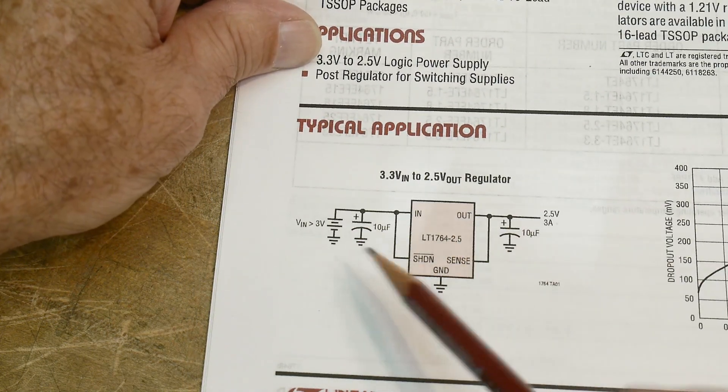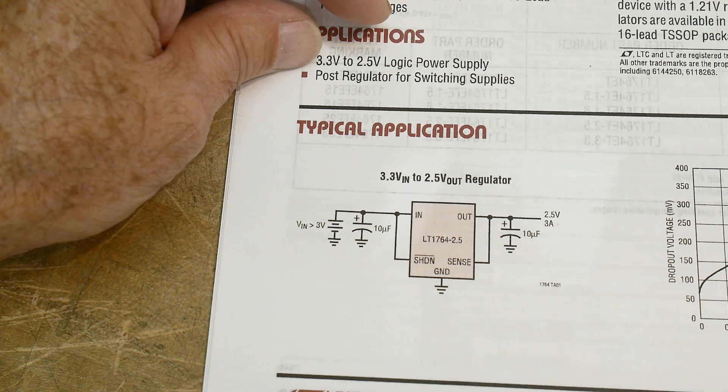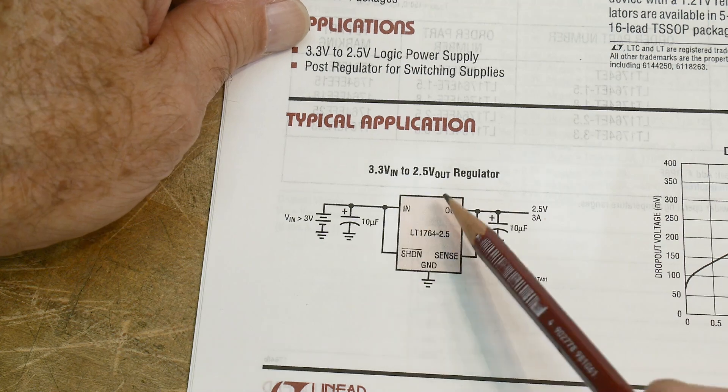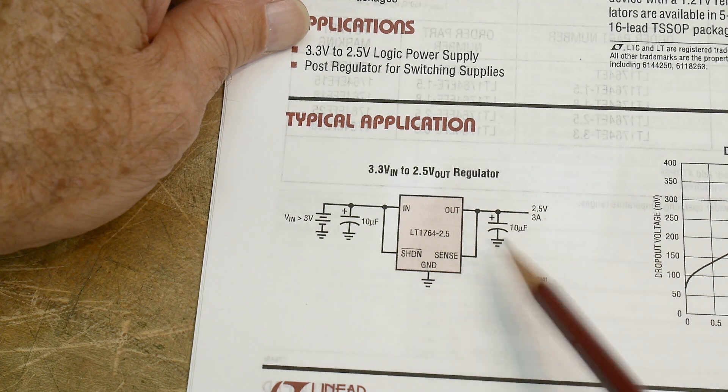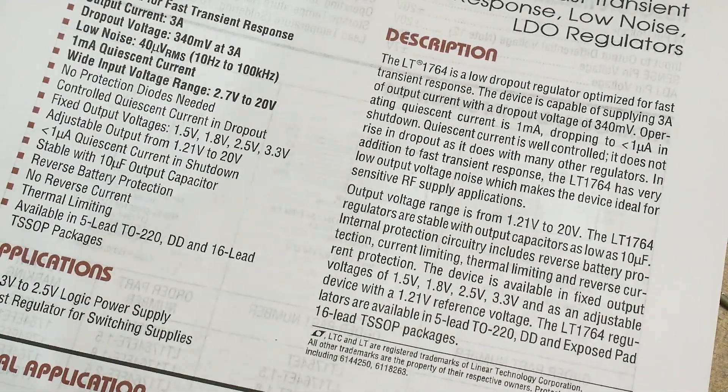So this is how you generally use it. You just need a 10 microfarad on the input and a 10 microfarad on the output and you're good to go. There are some versions that are fixed voltages and some versions that are adjustable. Mine happens to be an adjustable one, and the sense line here does the adjusting.